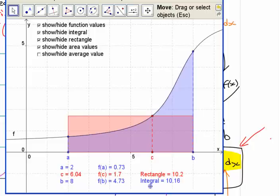The average value then is whatever this height is here. So f of c is 1.7. The low value over here is 0.73, the high value is 4.7. You can't say that the average value is just halfway in between those because this happens to be lower like that.